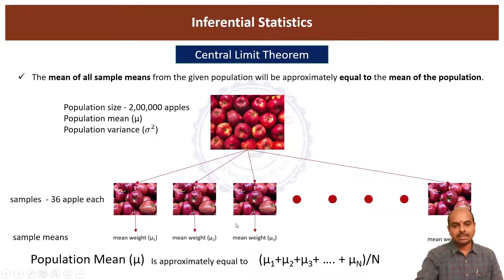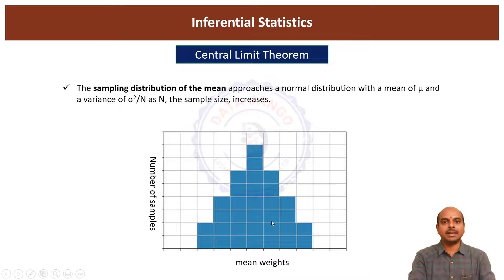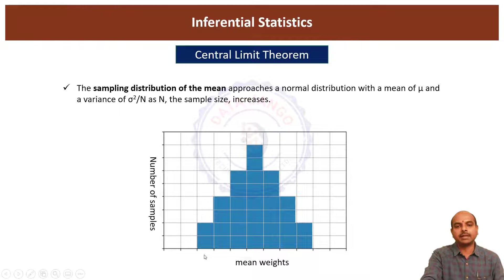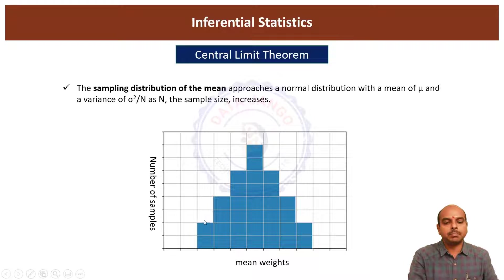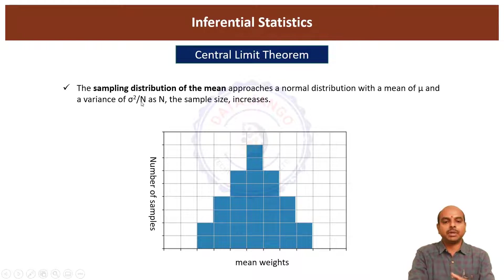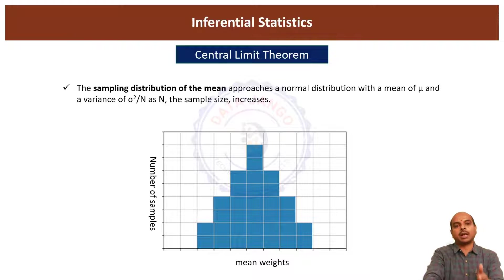That is the first statement's explanation. For the second statement: when you take N number of samples, the means of those samples are going to form a normal distribution. For example, there may be 2 samples with a mean of 10, 3 samples with a mean of 20, 5 samples with a mean of 30, around 8 samples with a mean of 40, and so on. As the mean weight grows, the number of samples reduces. In simple words, the means of all the samples you have selected are going to approach or form a normal distribution. This is the explanation of the central limit theorem.